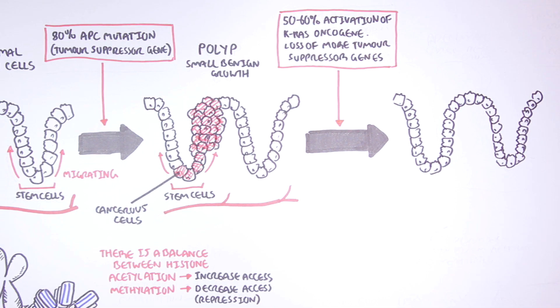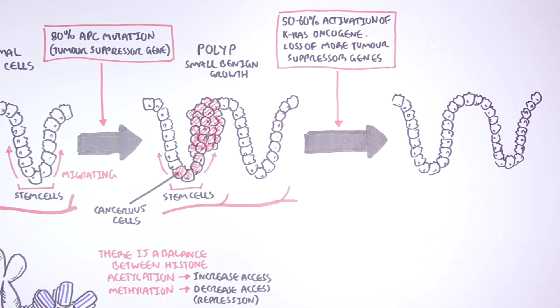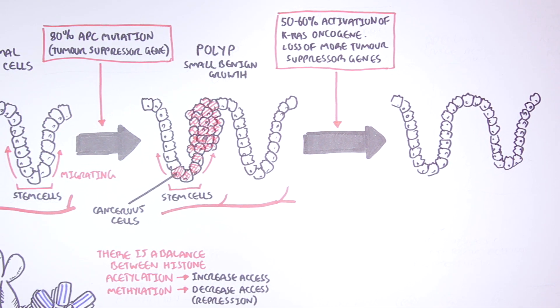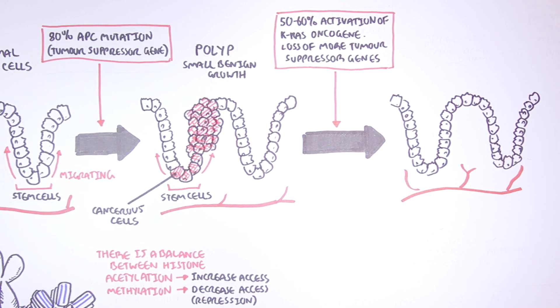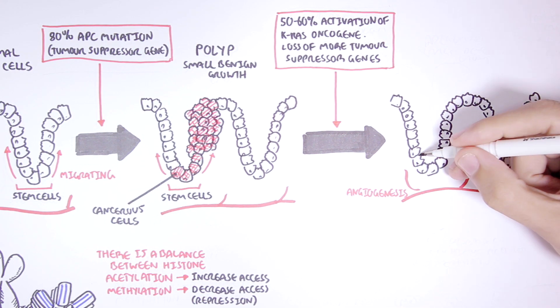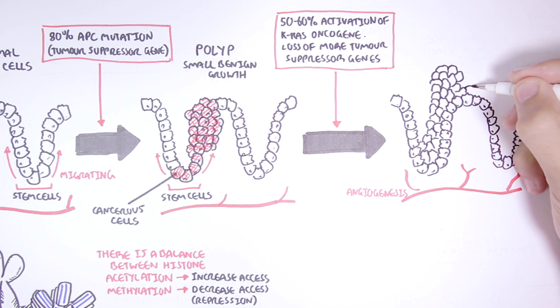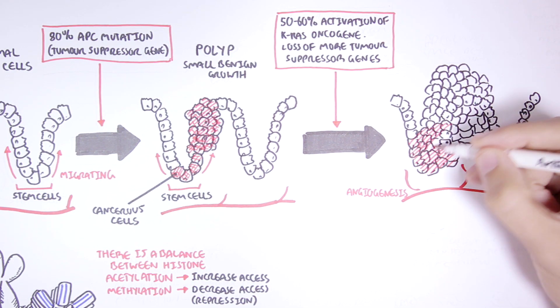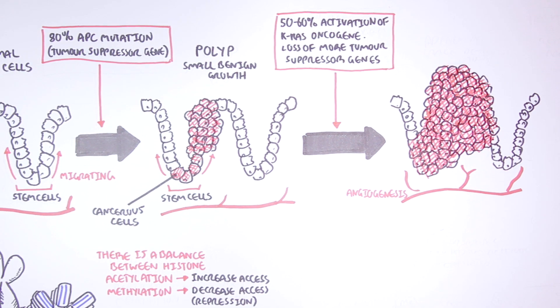However, a mutation of the KRAS gene results in a KRAS oncogene, and thus cell proliferation. The cells will begin to proliferate. This will create an adenoma, which is a larger benign growth.